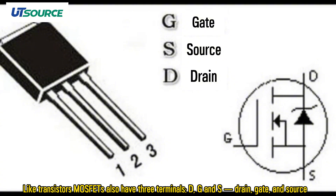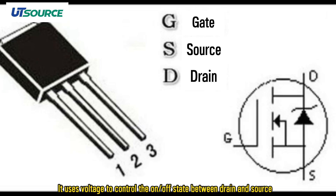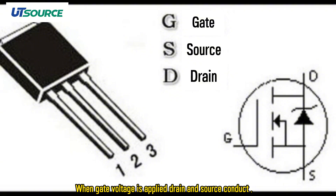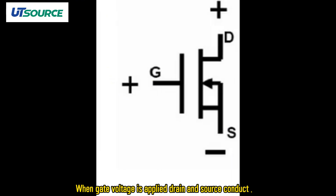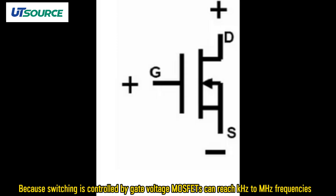Like transistors, MOSFETs also have three terminals: drain, gate, and source. It uses voltage to control the on or off state between drain and source. When gate voltage is applied, drain and source conduct. When gate voltage is zero, drain and source are cut off.